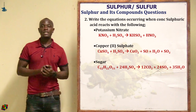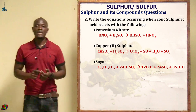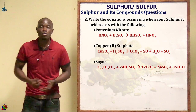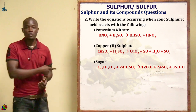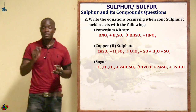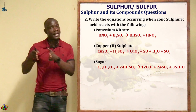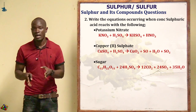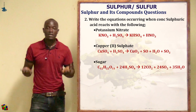When concentrated sulfuric acid reacts with copper(II) sulfate, you get copper(II) oxide, sulfur dioxide, water, and sulfur dioxide gas. Don't confuse this with dilute sulfuric acid reacting with copper(II) sulfate — with dilute acid you only get a salt and water. With concentrated acid, you get all four products.